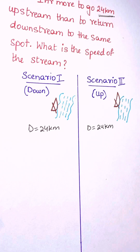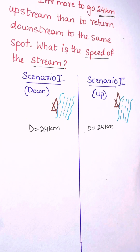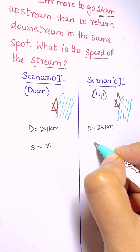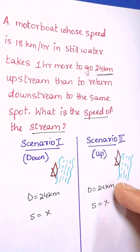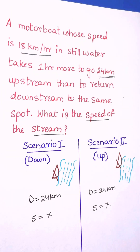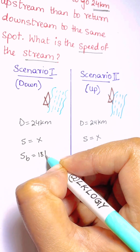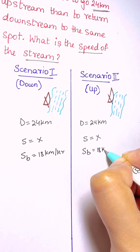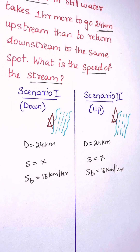The distance is 24 kilometers. We don't know the speed of the stream, so let's take it as x. The speed of the stream on both sides is x. The speed of the boat given in the question is 18 kilometers per hour. We need to find the speed of the stream.